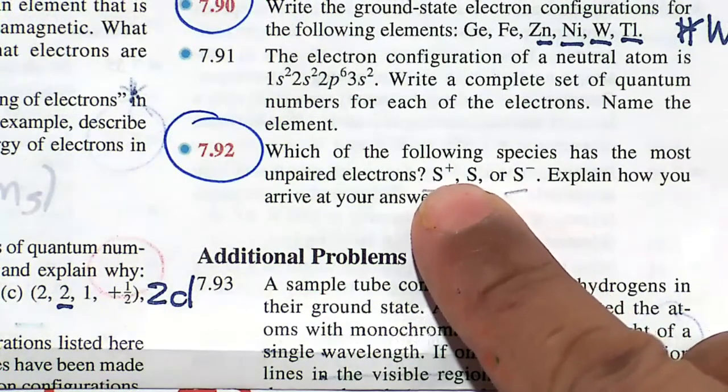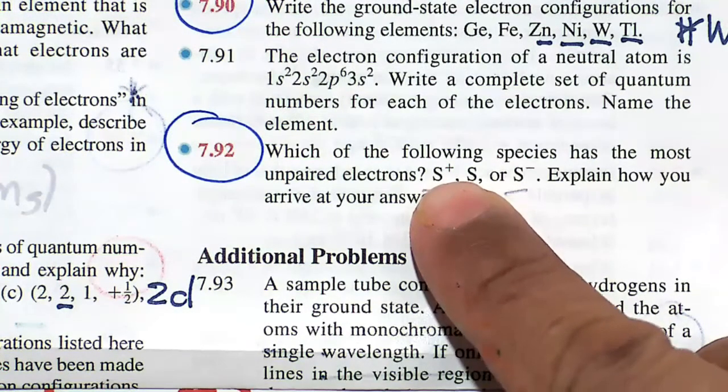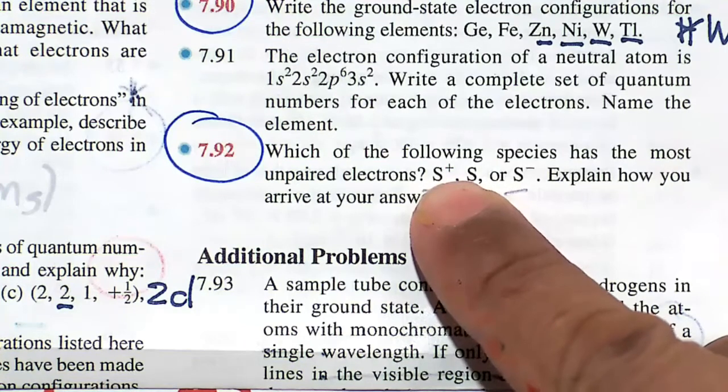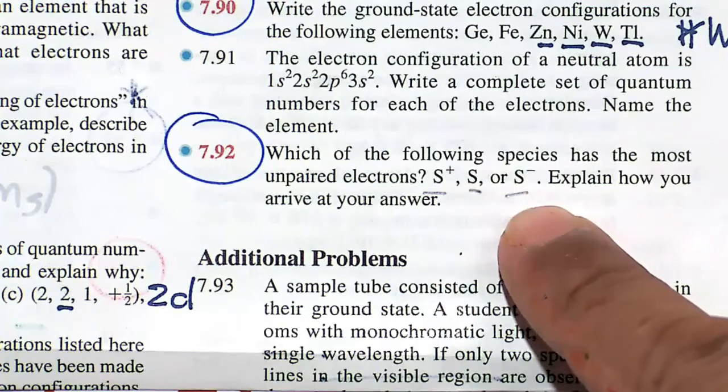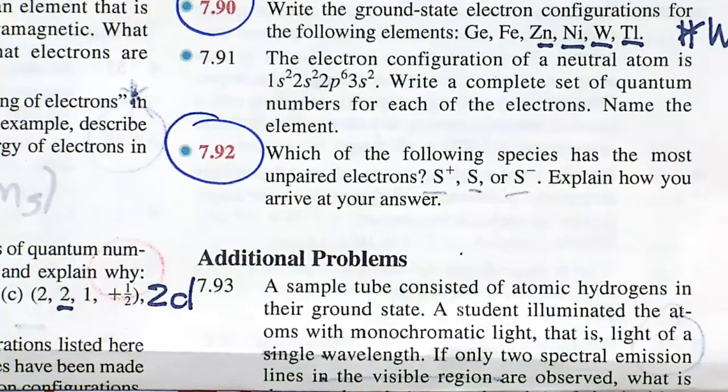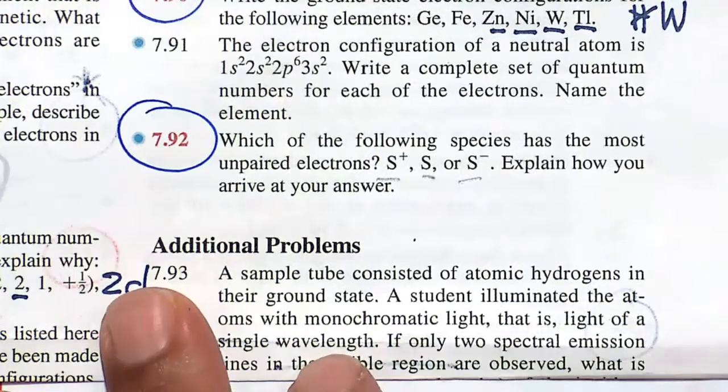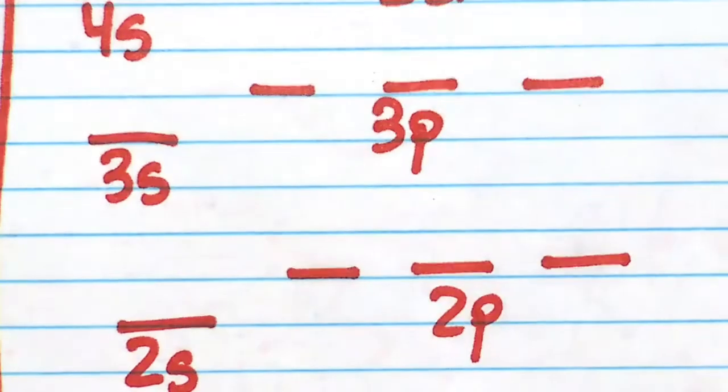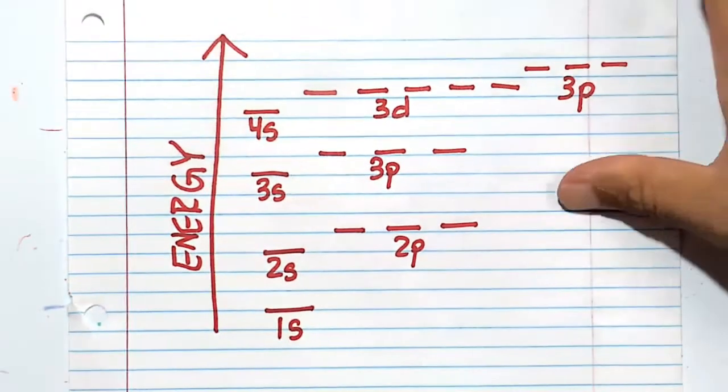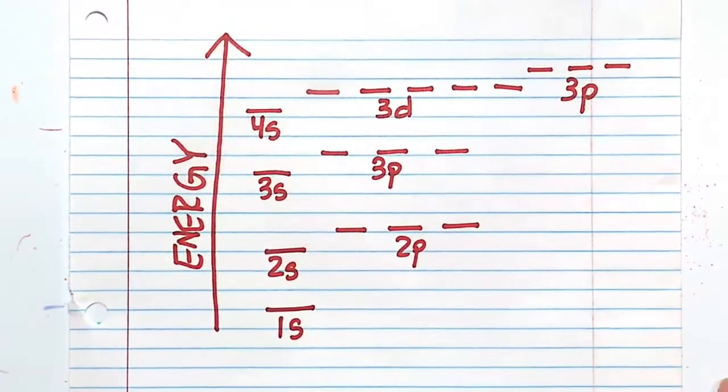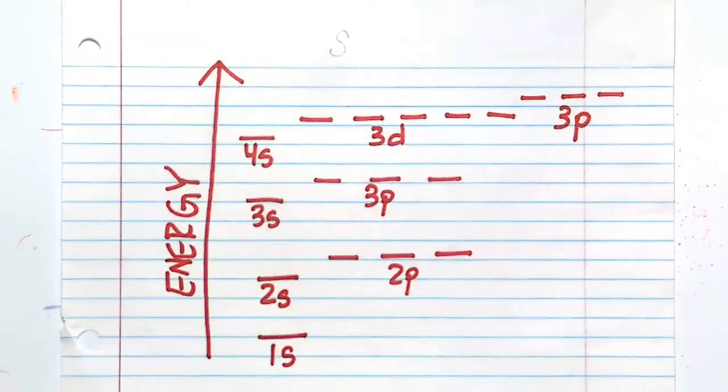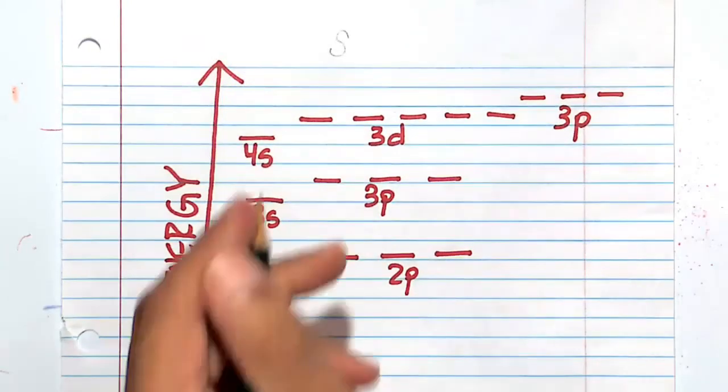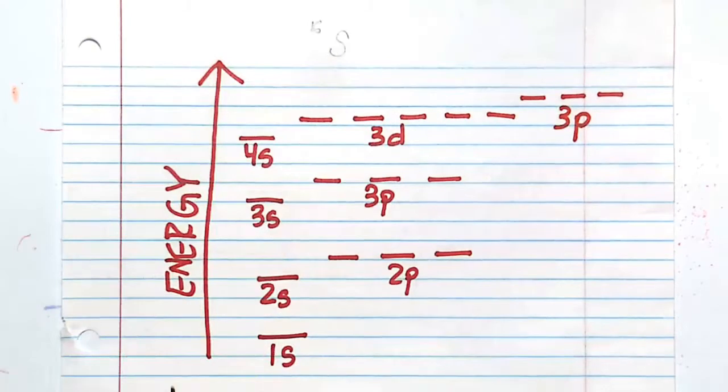But what about the electron configuration of S plus? Remember we are moving electrons, so S plus means it loses an electron, S minus means it gains an electron. Let's do this manually. The electrons are going to go in a very specific order. Let's just have S here by itself, and we know S has an atomic number of 16. So this is how they are going to go, remember the order.